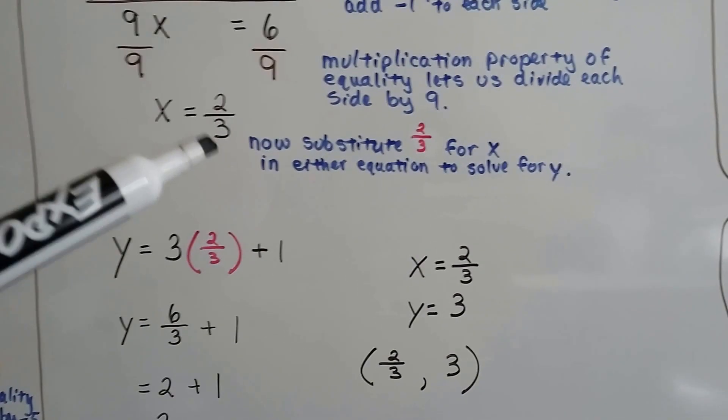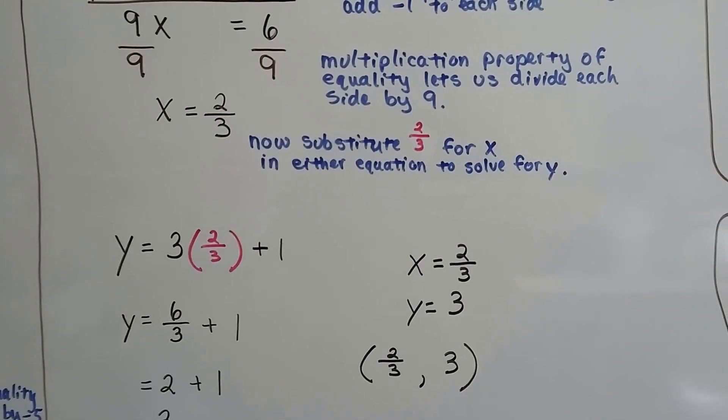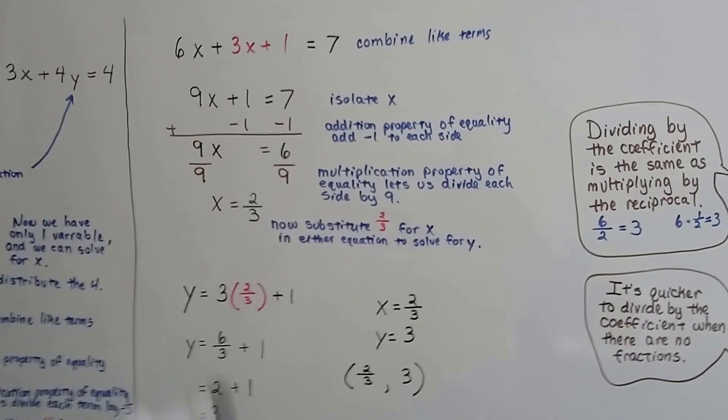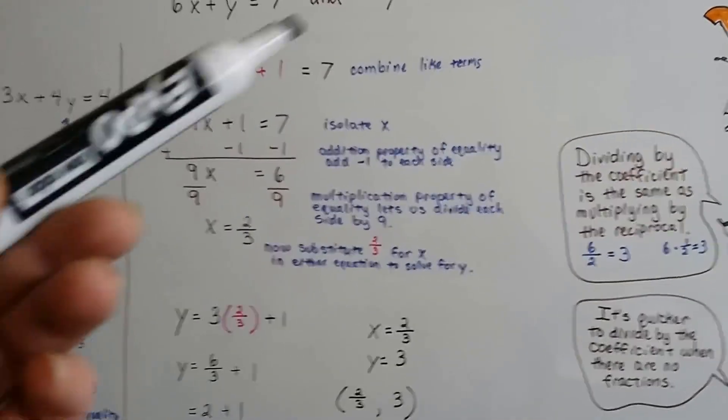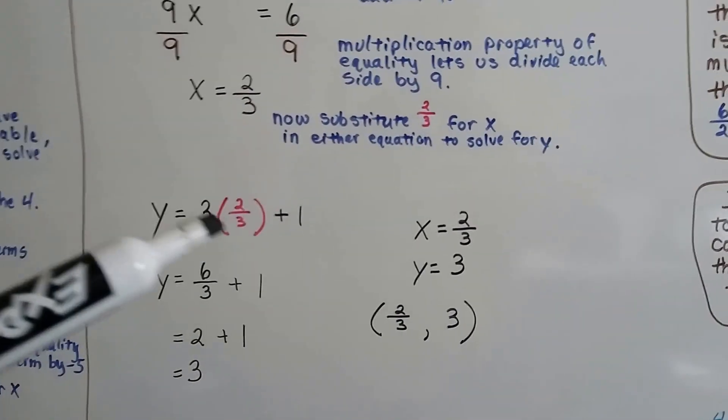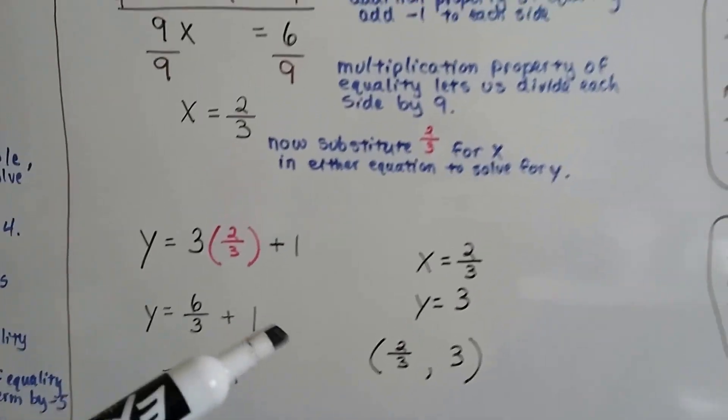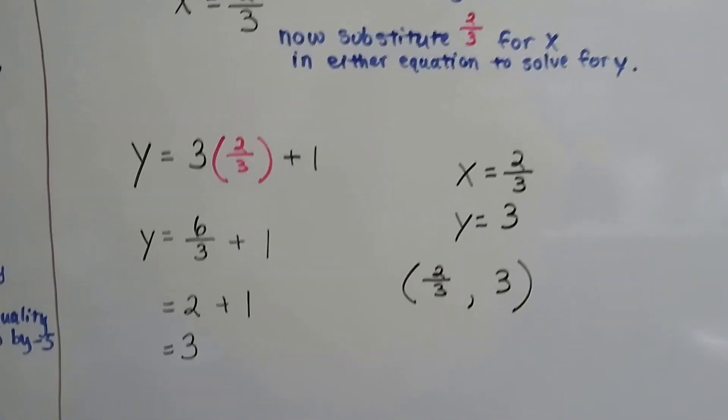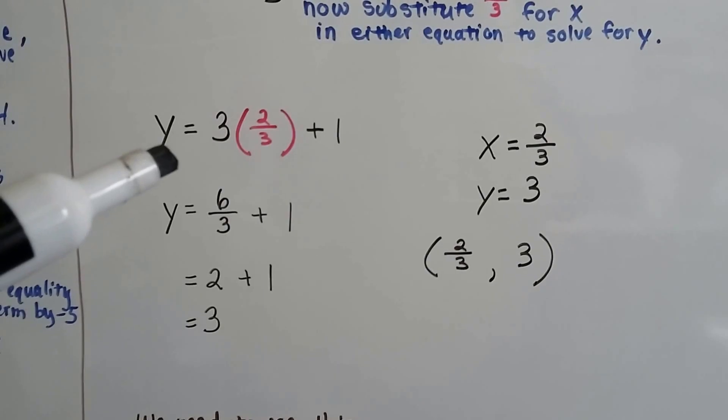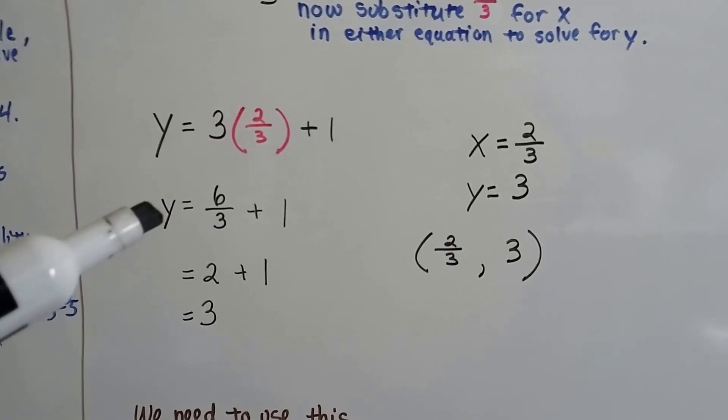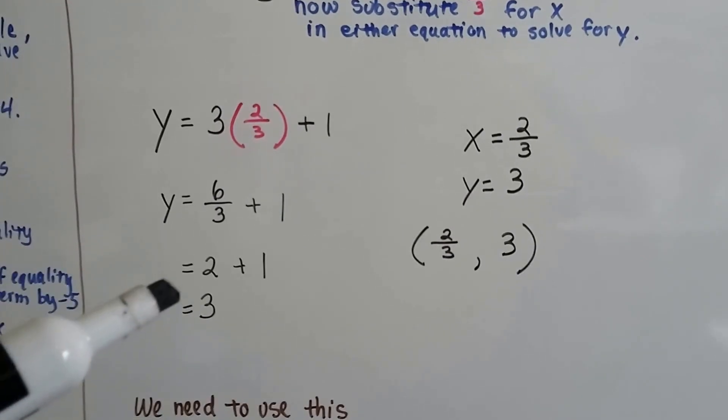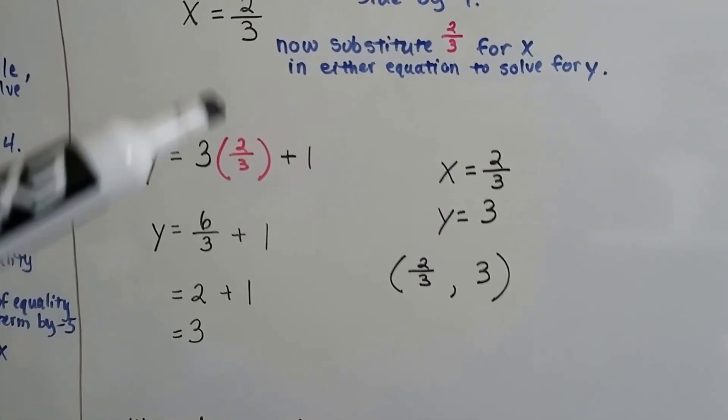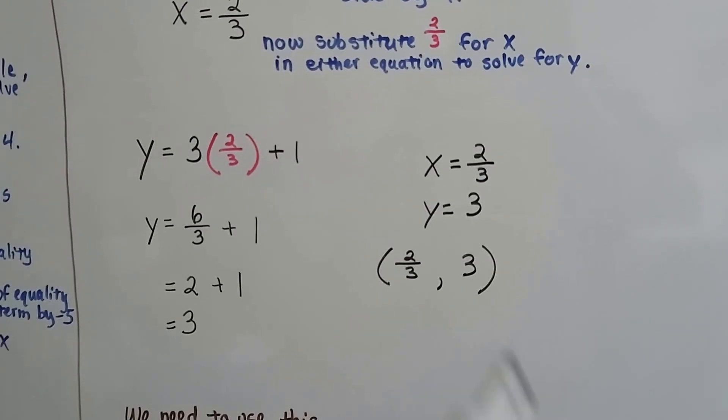Now we can substitute this 2 thirds in for x in one of the equations, doesn't matter which one, so that we can solve for y. So a lot of times, students will make a mistake and say, OK, I solved for x, I'm done. Oh no, we still have to find y. There's two variables here. So we're going to substitute this 2 thirds in to that second equation, because it's already set for y. We're going to put the 2 thirds there for the x. And it's going to help us find out what y is. So now we've got y equals 3 times 2 thirds plus 1. And that's y equals 6 thirds plus 1, isn't it? So that simplifies to 2 plus 1, which simplifies to 3. So now we know that y equals 3 and x equals 2 thirds. We've got our ordered pair, 2 thirds and 3.